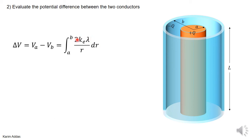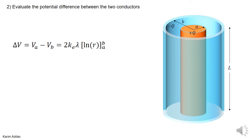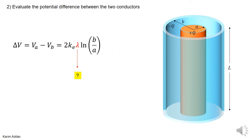The 2ke·λ can go outside the integral since they're constants, leaving the integral of 1/r dr. The integral of 1/r dr is ln(r), and substituting the upper and lower limits gives ln(B) minus ln(A), which simplifies to the logarithm of the ratio ln(B/A).